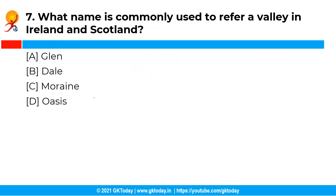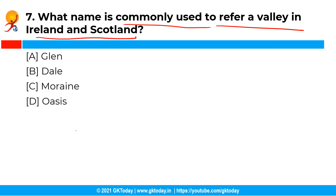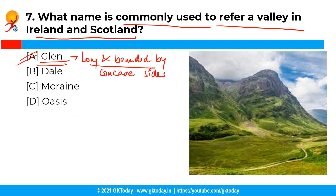The next question is: What name is commonly used to refer to a valley in Ireland and Scotland called? The correct answer is option A, that is Glen. Glen is a valley that is long and gently bounded by concave sides, and it is typically used to refer to valleys found in Scotland and Ireland.